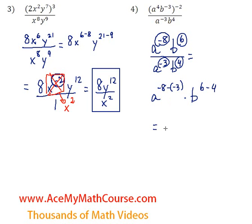Okay, so now we're subtracting a negative - that's equivalent to adding. So negative 8 plus 3 is negative 5 times b to the power of... The b's look like my 6's. Hopefully nobody gets confused. That's a b. 6 minus 4 is 2, so b squared.